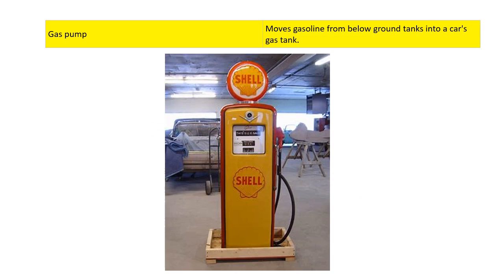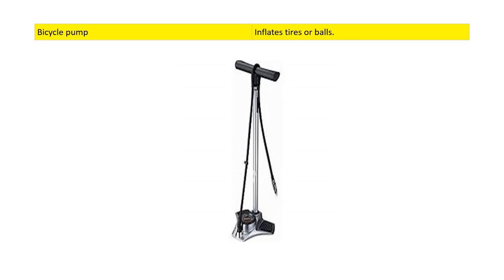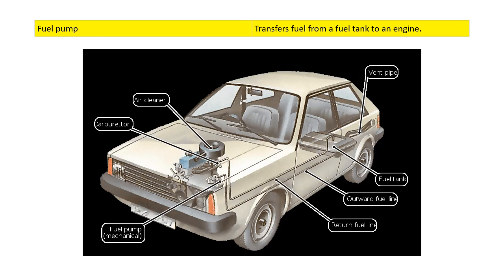One type of pump is a gas pump, which moves gasoline from below-ground tanks into the car's gas tank. Another type is a sump pump, which eliminates water from a basement. Another type is a bicycle pump, which inflates tires and balls. A peristaltic pump circulates one's blood during surgery, and a fuel pump transfers fuel from a fuel tank to an engine.